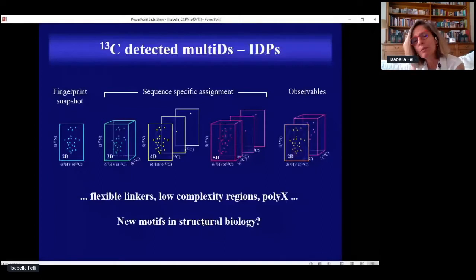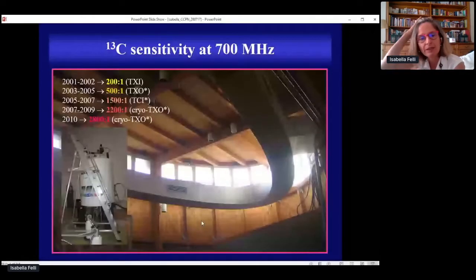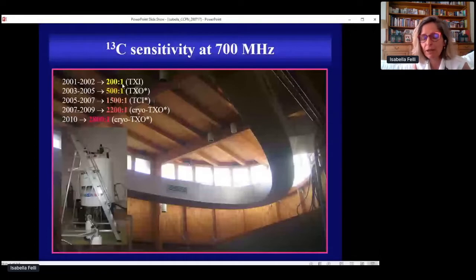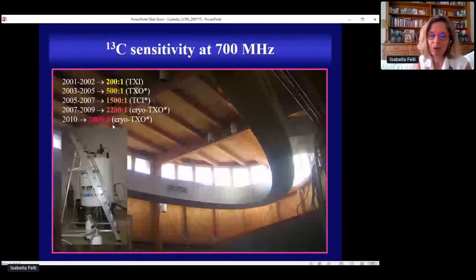The major drawback of carbon-13 direct detection is the intrinsic lower sensitivity compared to proton because of the lower gyromagnetic ratio. But fortunately, over the years the instrumentation has largely compensated this disadvantage. There has been an increase by a factor of more than 10, which means a reduction of more than 100 in terms of experimental time, meaning that now we can do things we could only think of before. We're expecting an extra big leap in both sensitivity and resolution by going to higher fields.